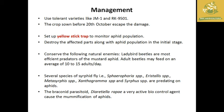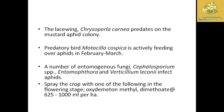Management of mustard aphid includes use of tolerant varieties like JM1 and RK9501, sowing the crop before 20th October to escape damage, using yellow sticky traps to monitor aphid populations, and conserving natural enemies like ladybird beetles. Braconid parasitoids can be released as a biocontrol agent for mummification of aphids. Chemical pesticides like oxydemeton-methyl or dimethoate at 625 to 1000 ml per hectare are also effective.